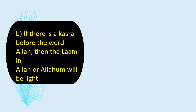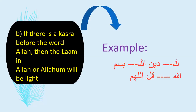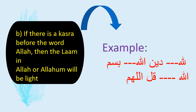If there is a Kasra before the word Allah, then the Lam in Allah or Allahumma will be light. Example: 'lillahi' — the 'li' has Kasra before the word Allah, so the Lam in Allah is light. 'Deenillahi' — pronounced lightly, not heavily. It is 'deenillahi', with a light Lam.